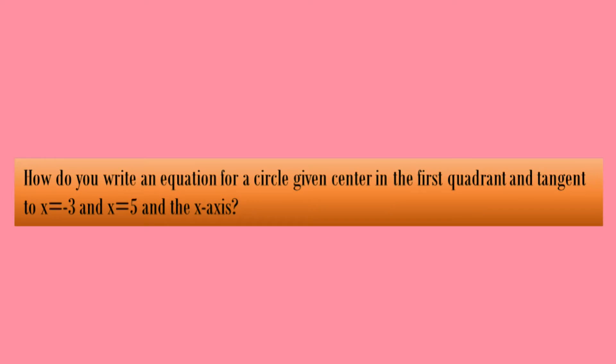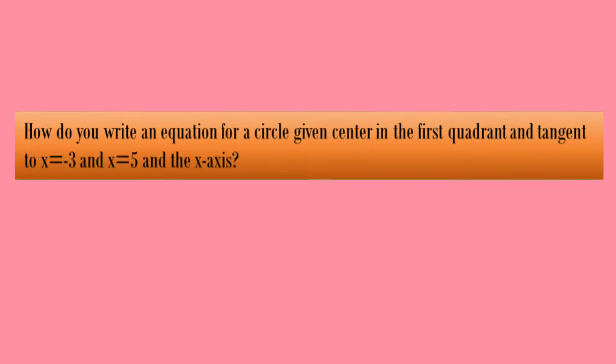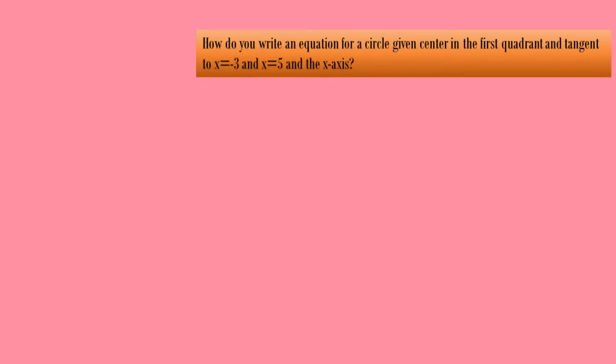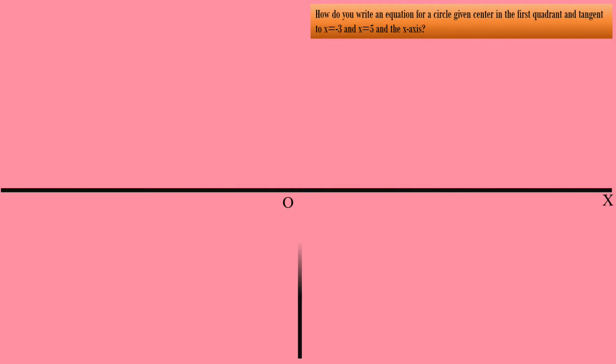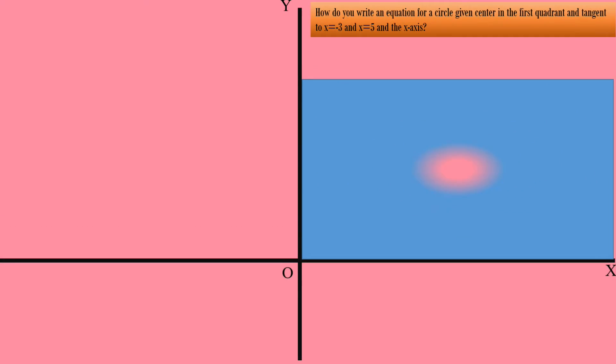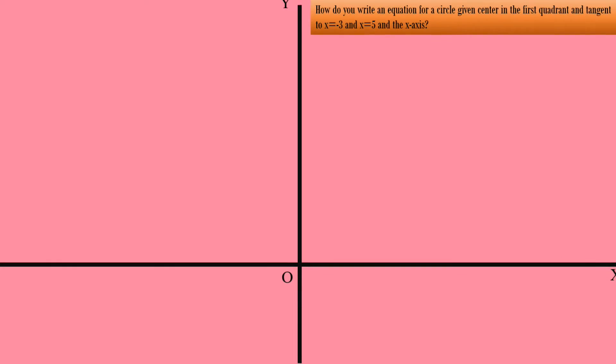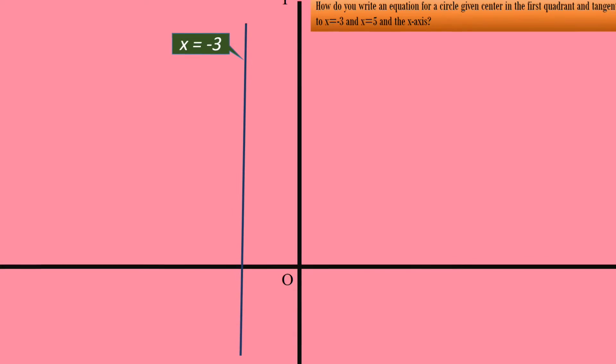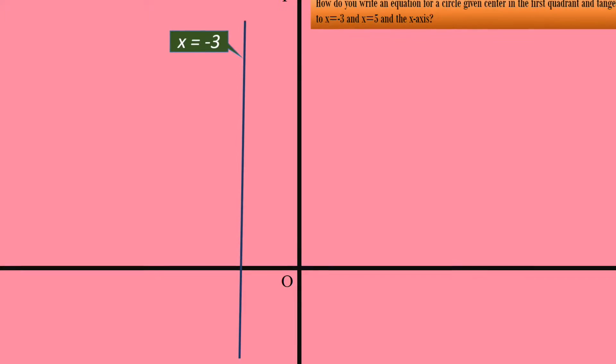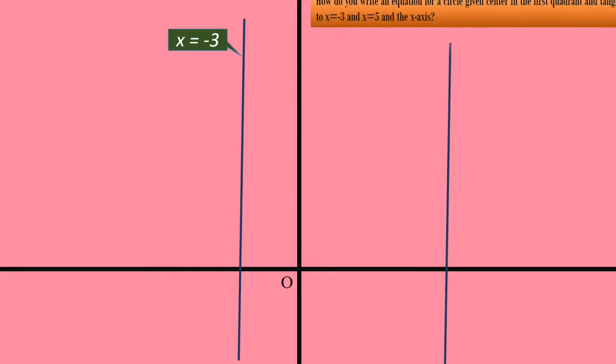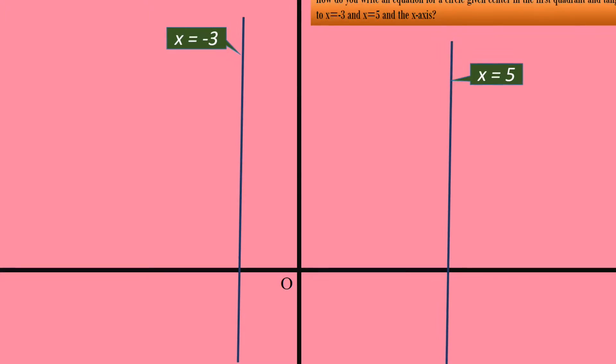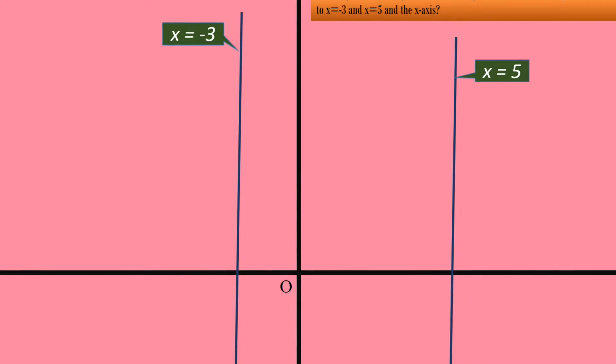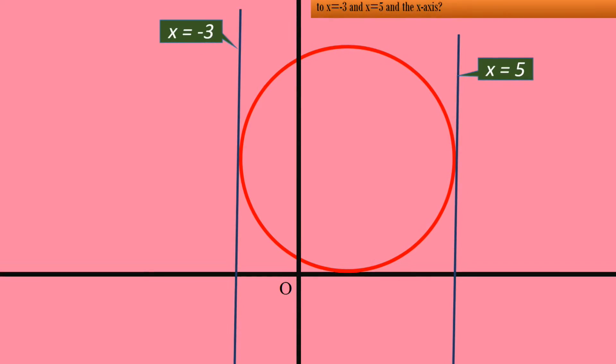From the problem we understand, we have to find the equation of the circle. The information given are: the center of the circle is in the first quadrant, it has three tangents. First tangent is x=-3, second tangent is x=5, and the third tangent is x-axis itself. So, the circle must be inside these tangents.